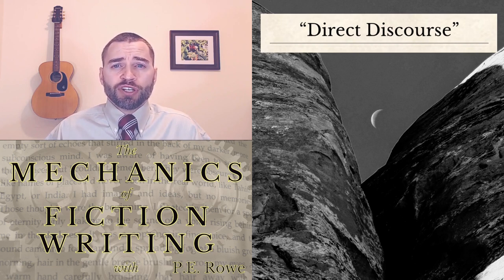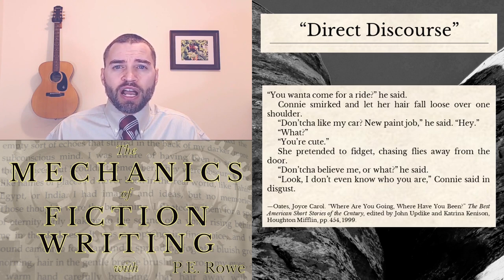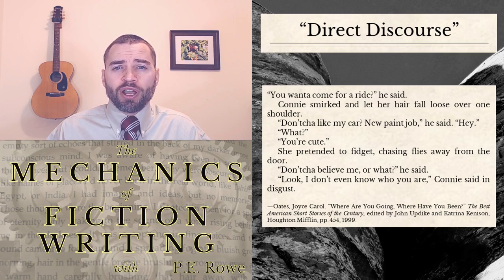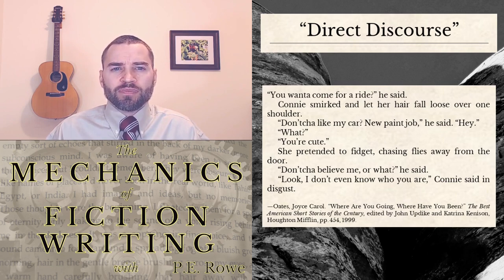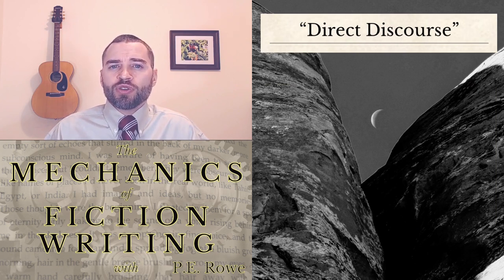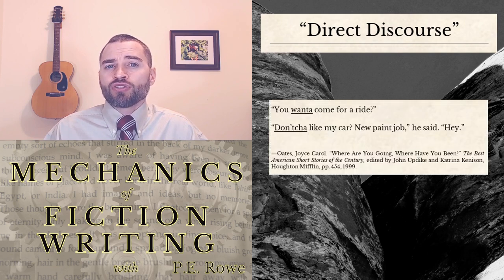So named because the convention of the fictional game has it that this form of utterance is the character's speech verbatim. You all know how this part of the game gets played: 'Wanta come for a ride?' he said. Connie smirked and let her hair fall loose over one shoulder. 'Don'tcha like my car? New paint job,' he said. 'Hey.' 'What?' 'You're cute.' She pretended to fidget, chasing flies away from the door. 'Don't you believe me or what?' he said. 'Look, I don't even know who you are,' Connie said in disgust. This is a snippet from Joyce Carol Oates' short story 'Where Are You Going? Where Have You Been?' A couple of things to notice in this dialogue are the unconventional contraction 'don'tcha' and the conflating of 'want to' into 'wanta.'